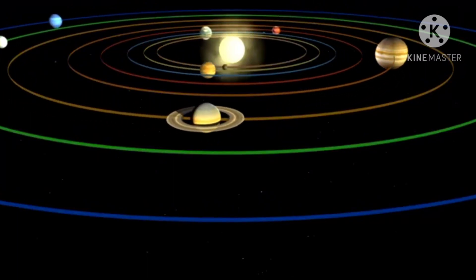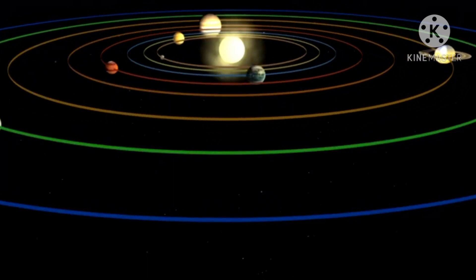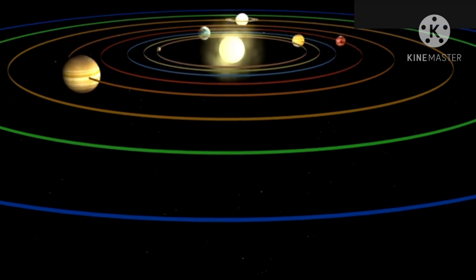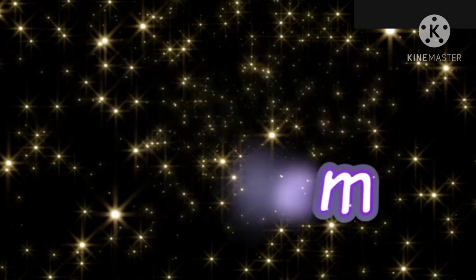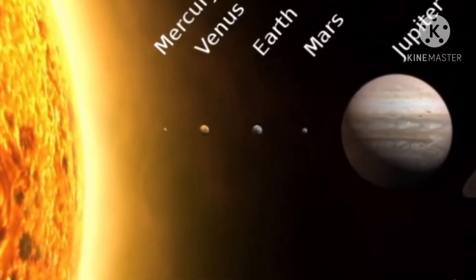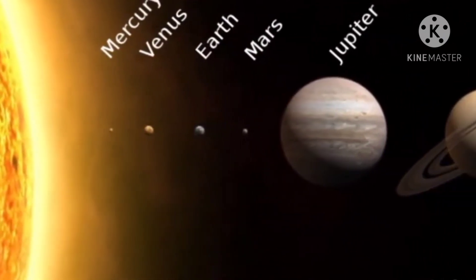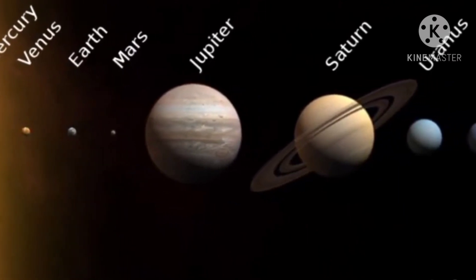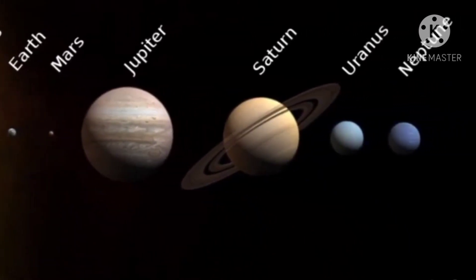Hey kids, good morning. How are you all? Hope you all are fine. Today we are going to start a new lesson. It is about our solar system — the family of sun and its eight planets, and these constitute a solar system. In this chapter we are going to talk about the solar system. So let's start with the sun.